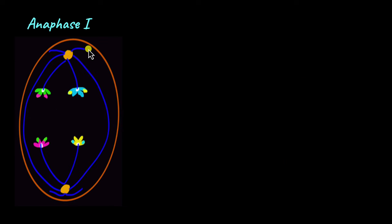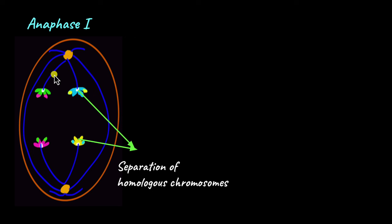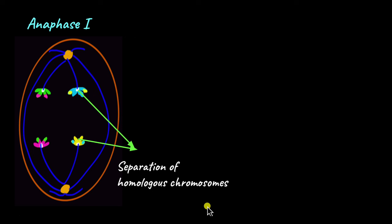As anaphase 1 happens, the homologous chromosomes separate. The microtubules attached to the kinetochores begin to pull the homologous chromosomes apart. So these two were one pair and these two were one pair — now this pair separates and this pair separates. The chromosomes are still made up of two sister chromatids; the sister chromatids remain together, but the homologous pair separates.